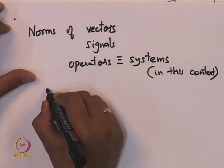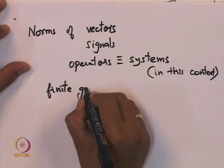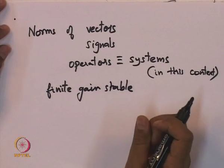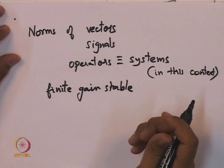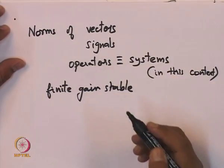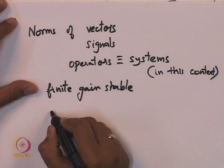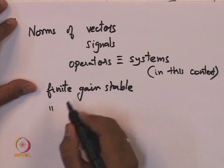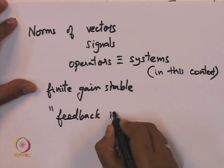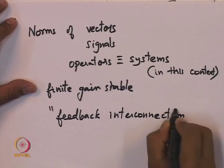We will also speak about finite gain stable — that is the objective for this lecture. We are going to see the definition of what it means for a system to be finite gain stable. For that we need these other concepts, and eventually we will speak about feedback interconnection being stable and under what conditions a feedback interconnection is stable.